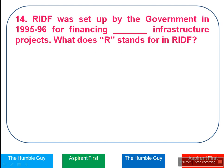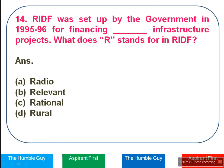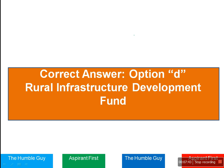RIDF was set up by the government in 1995-96 for financing infrastructure projects. What does 'R' stand for in RIDF? The options are Radio, Relevant, Rational, or Rural. The answer is very obvious — Option D, Rural. The full form of RIDF is Rural Infrastructure Development Fund.